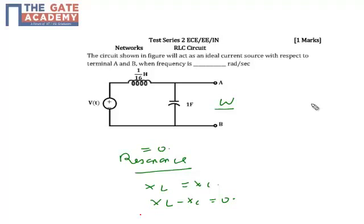Which means that my impedance is going to be infinity. So if I want this circuit to act as an ideal current source, I should operate the circuit in resonance.